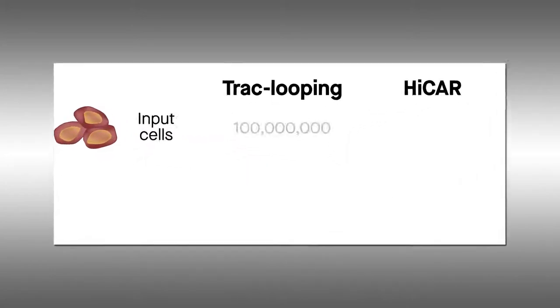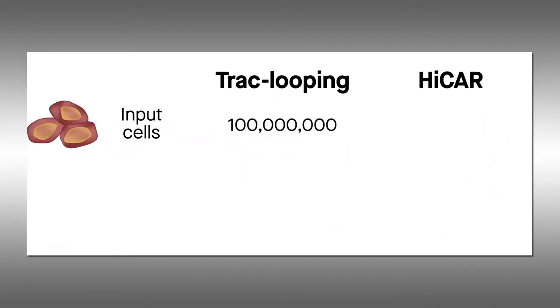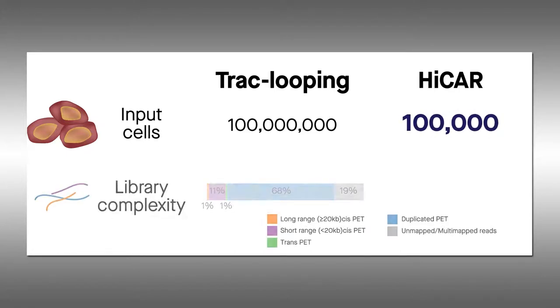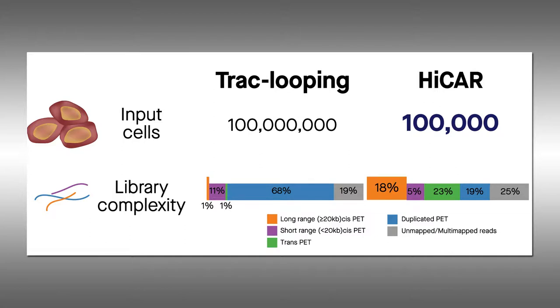Compared with the track-looping technique for detecting long-range chromatin interactions, HICAR required 1,000 times fewer input cells, yielded more complex libraries, and identified about 18 times more long-range paired-end tags, which are useful for 3D analysis across long genomic distances.